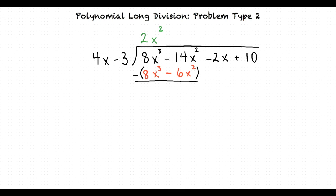8x cubed minus 8x cubed equals zero which means we don't need to write anything, and negative 14x squared minus negative 6x squared equals negative 8x squared.